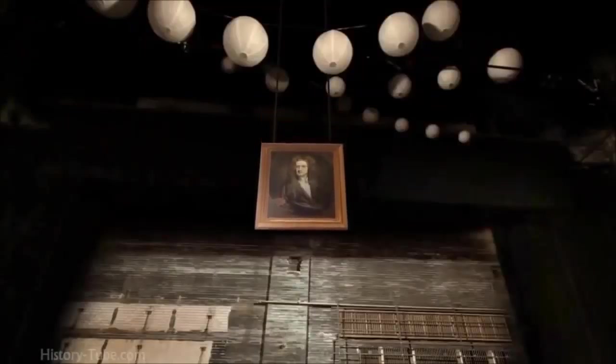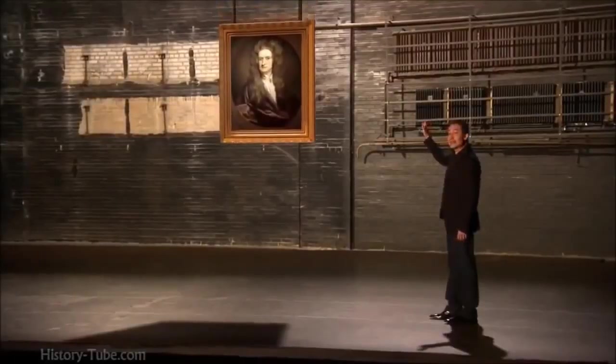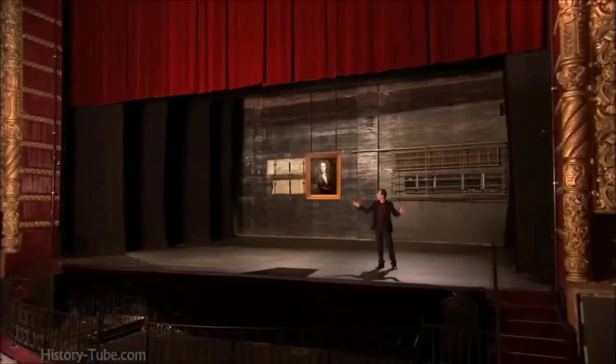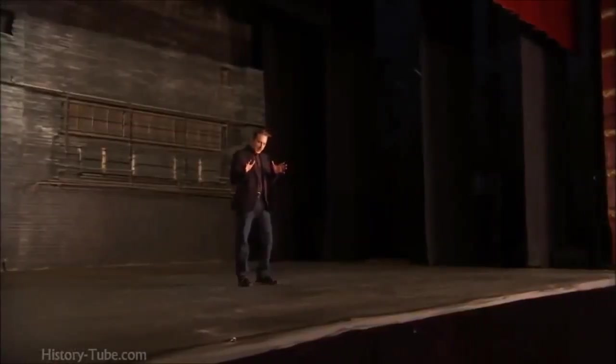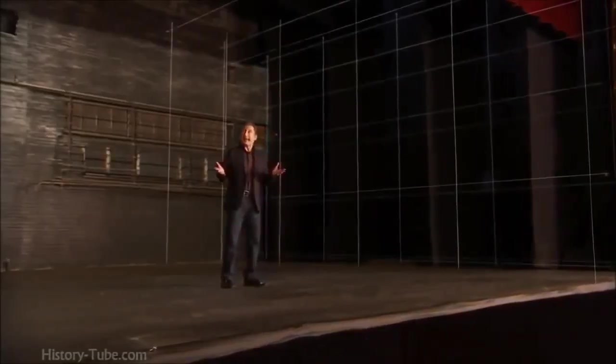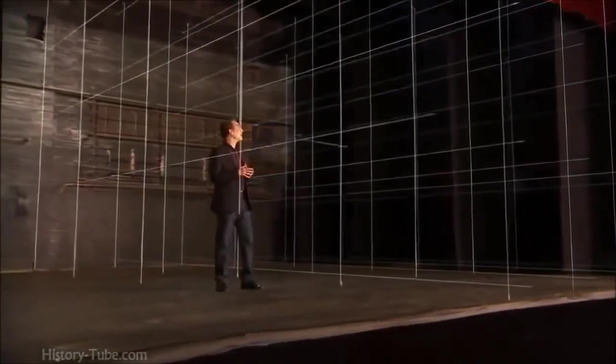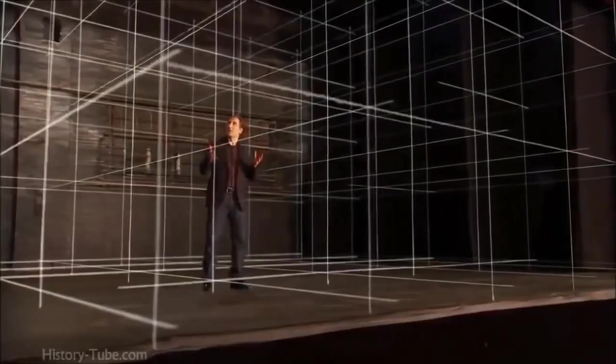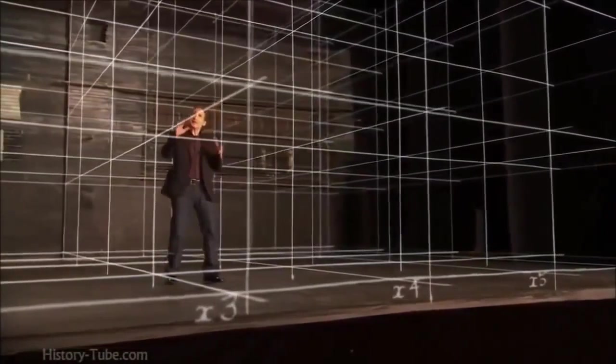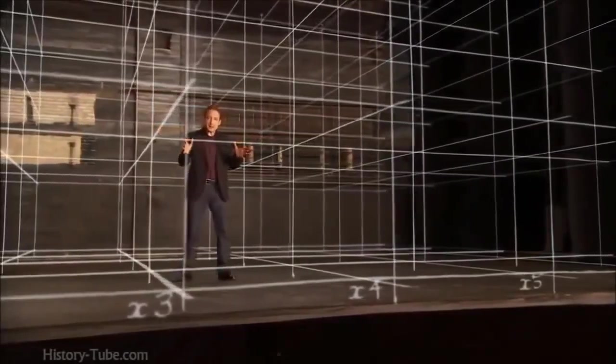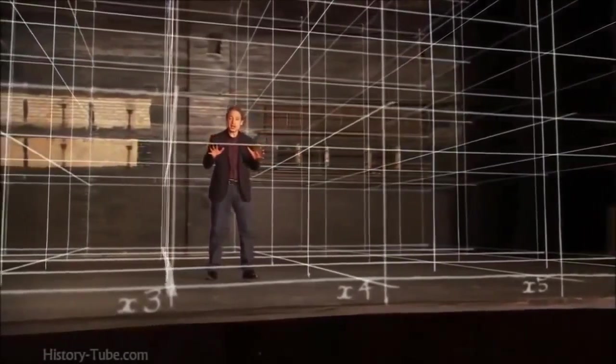But Isaac Newton? He did. This is how the father of modern science pictured space as an empty stage. To Newton, space was the framework for everything that happens in the cosmos. The arena within which the drama of the universe plays out. And Newton's stage was passive, absolute, eternal, and unchanging.